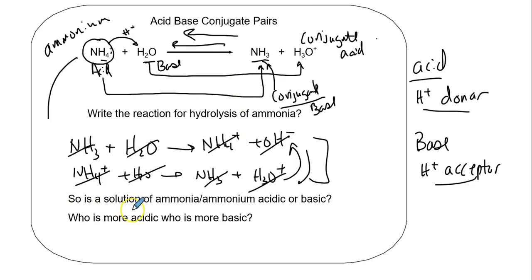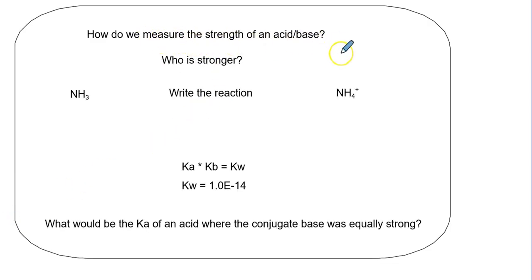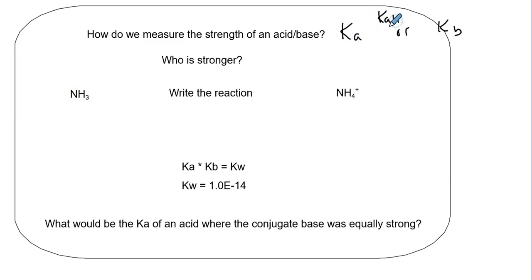So is a solution of ammonia or ammonium acidic or basic? It turns out we have this idea of strength, and strength and concentration are two things that will affect this. Strength meaning how vigorously can you push towards products. How do we measure the strength of an acid? We use the Ka or Kb value. The Ka for this hydrolysis - I've always thought it should be written as KAH to remind ourselves it's the acid hydrolysis, and KBH for the base.